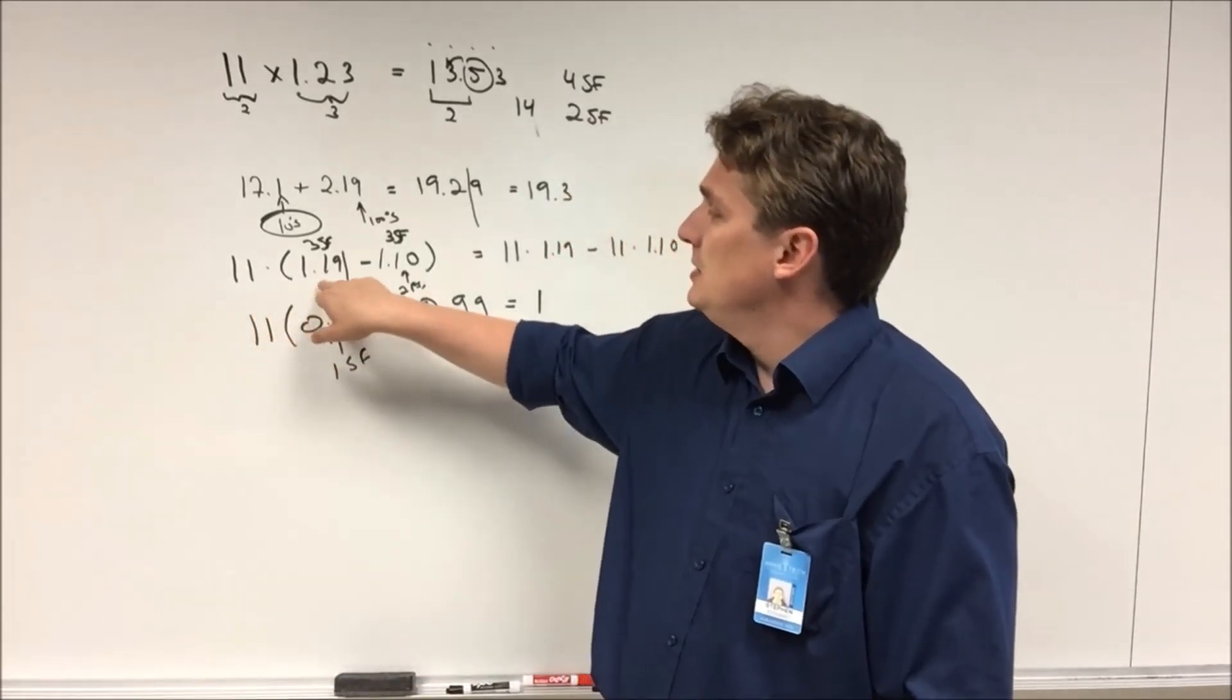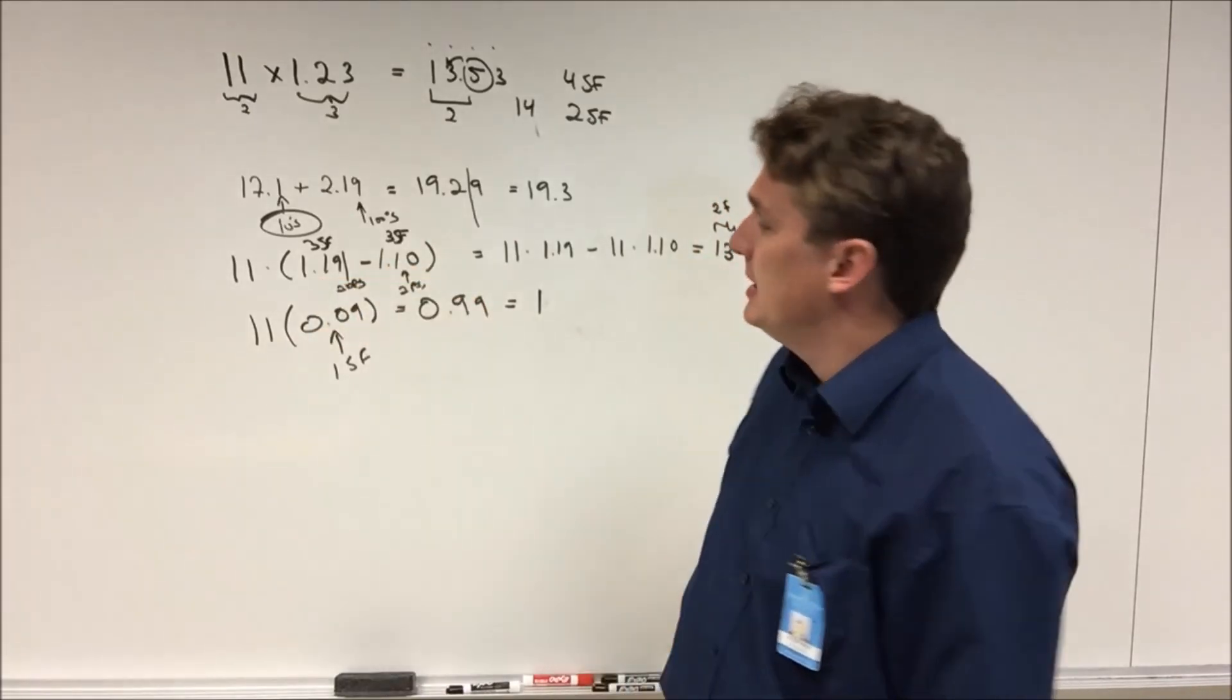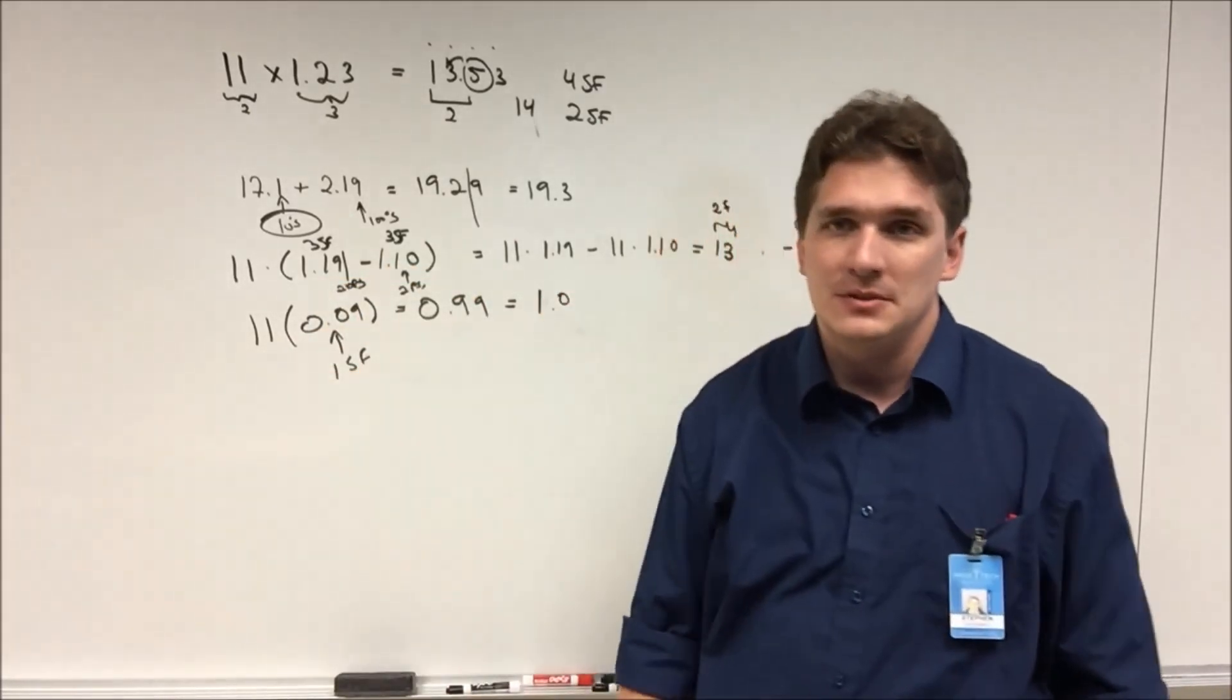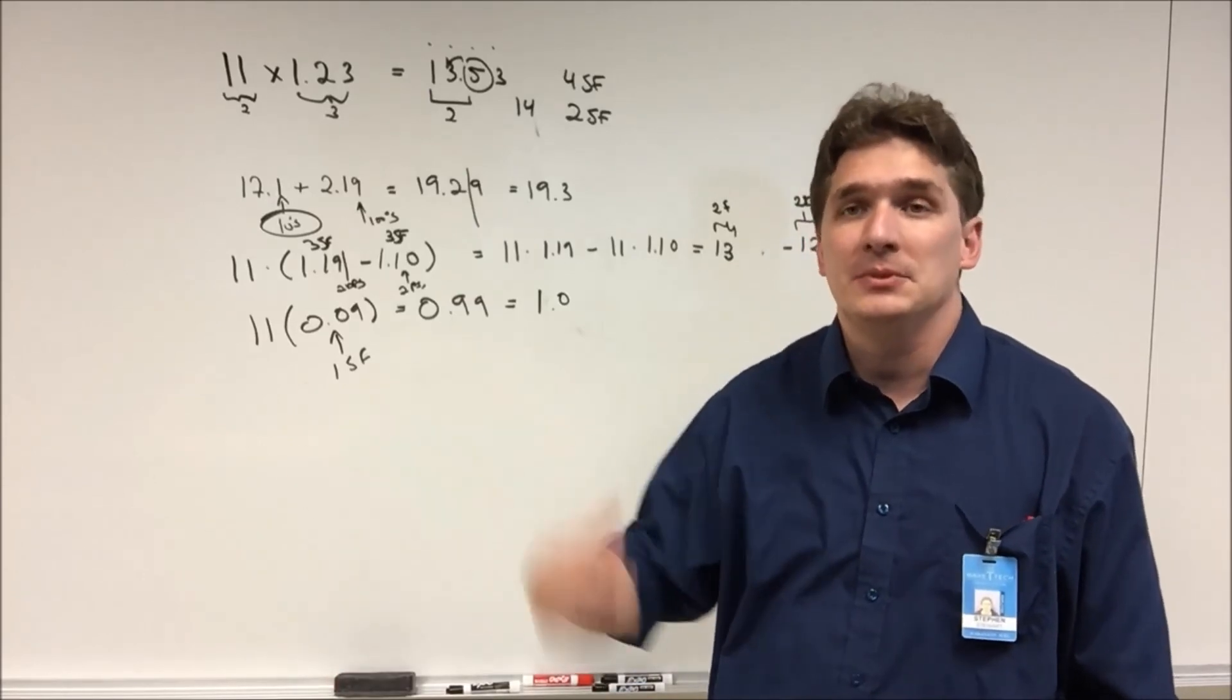But in a case like this, you've got two times the number with three times the number plus three. I'd say stick to two significant figures and just kind of use the multiplication rule and let the multiplication rule dominate.